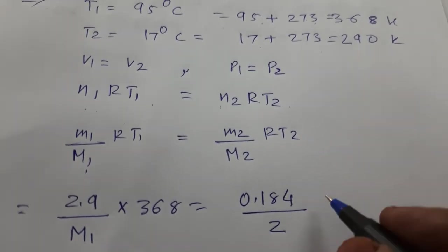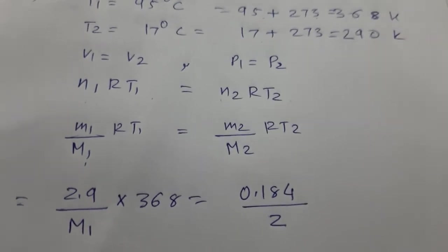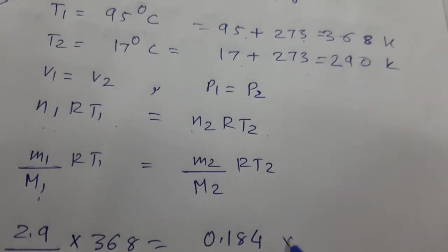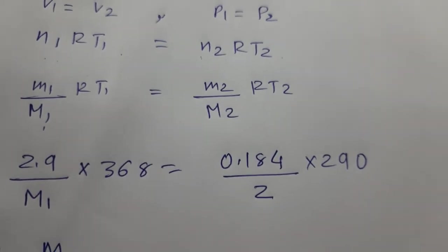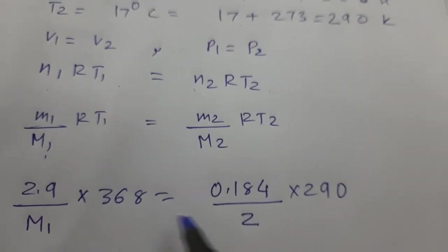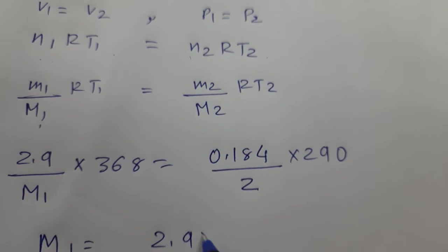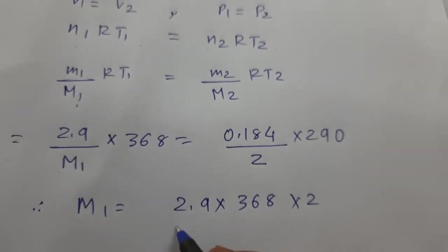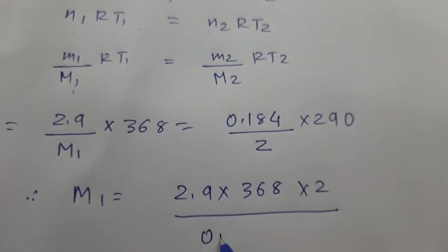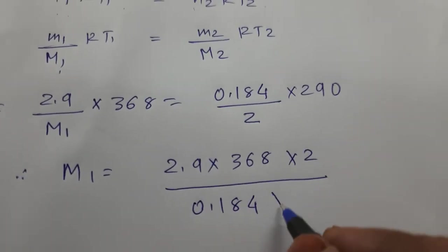R we have already cancelled. And T2 is 290. Therefore, M1 is equal to 2.9 into 368 into 2 divided by 0.184 into 290.